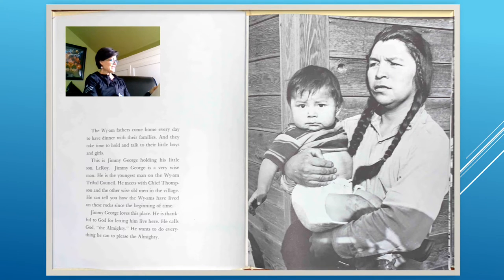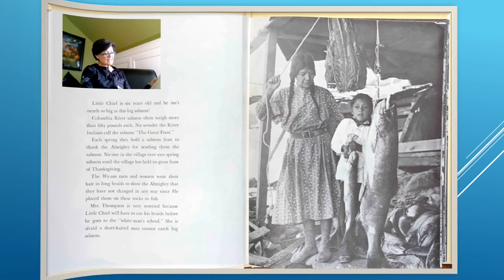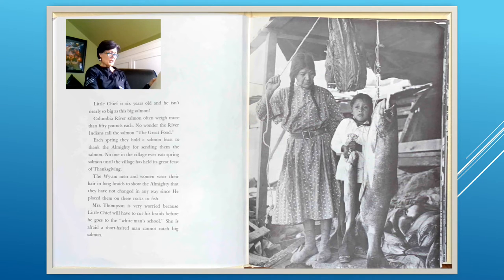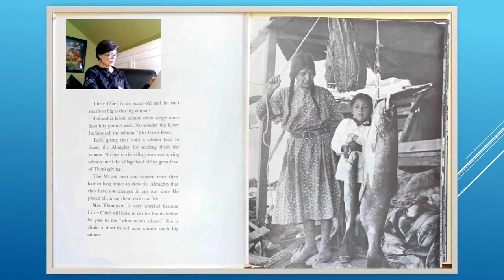Little Chief is six years old and he isn't nearly so big as this big salmon. Columbia River salmon often weigh more than 50 pounds each. No wonder the river Indians call the salmon 'the great food.' Each spring they hold a salmon feast to thank the Almighty for sending them the salmon. No one in the village ever eats spring salmon until the village has held its great feast of Thanksgiving. The YM men and women wear their hair in long braids to show the Almighty that they have not changed since he placed them on these rocks to fish.